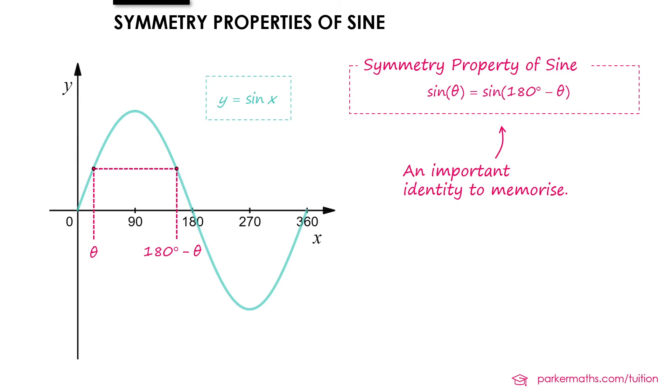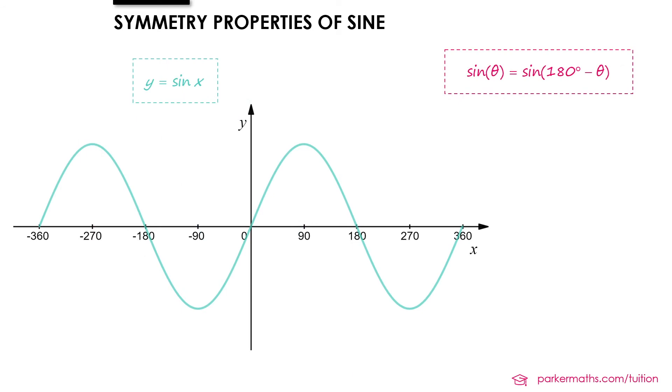Now just here we've only shown it for a value between 0 and 90. Let's just make sure it works for some other values as well. So we'll go back to our graph between minus 360 and 360. We could pick another value on our graph, let's say 225 degrees.